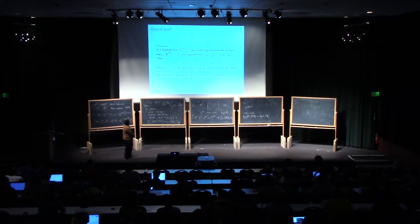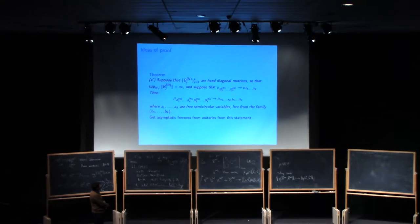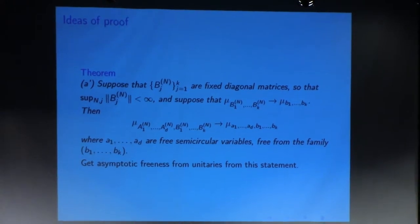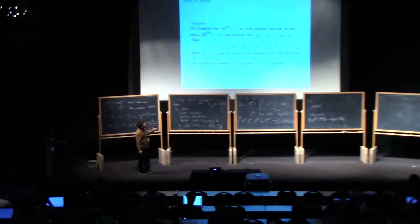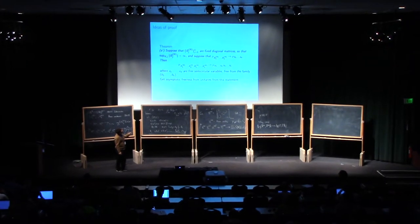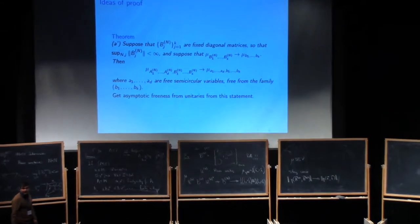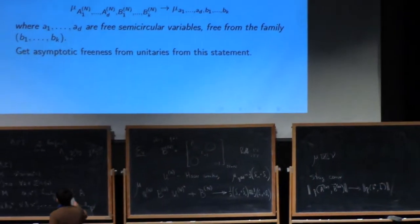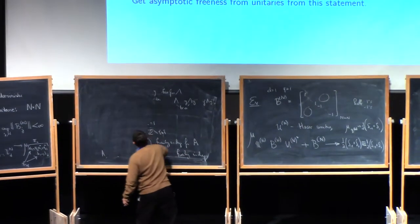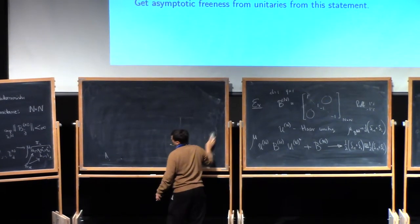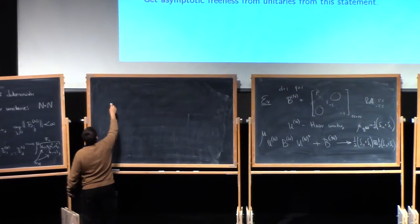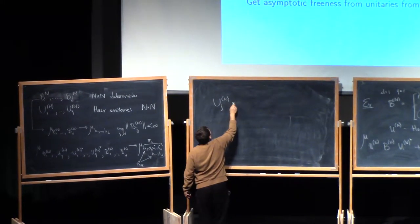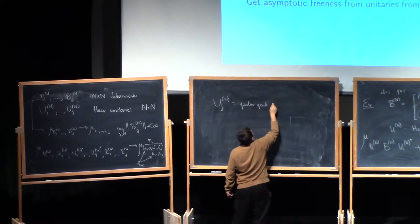Alright, so this is the theorem that I want to concentrate on, in terms of ideas of the proof. So first of all, let me explain how the first theorem, about unitary matrices, how can that be deduced from this statement? So this statement is about GUE. A_1 to A_D are GUE here. And B_1 to B_K are fixed deterministic matrices. So how do we get the unitary statement? Well, the observation is essentially that, and I think this was mentioned in Percy's talk,